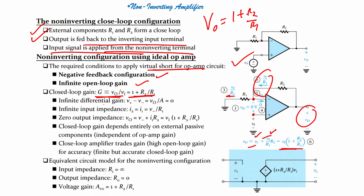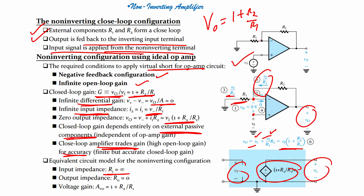The closed-loop gain for the non-inverting amplifier is 1 + R2/R1. The ideal op-amp properties include: infinite differential gain, infinite input impedance, and zero output impedance. The closed-loop gain depends entirely on external passive components R1 and R2. In the equivalent circuit model, input impedance is infinite, output impedance is zero, and the gain is 1 + R2/R1.